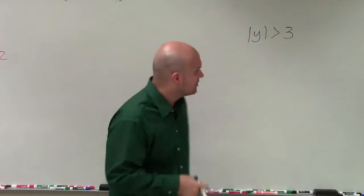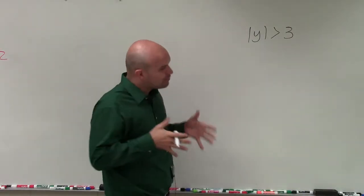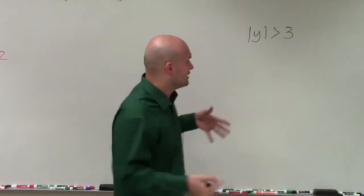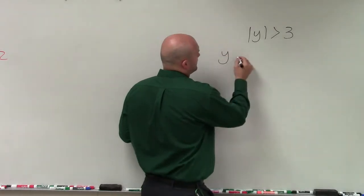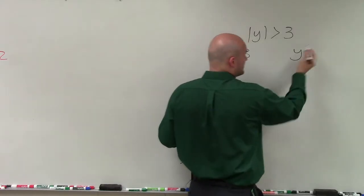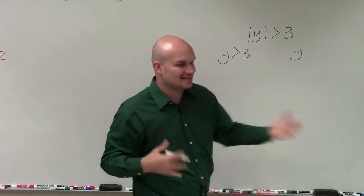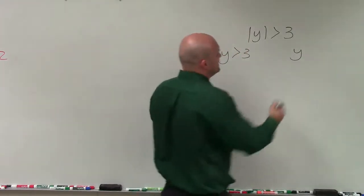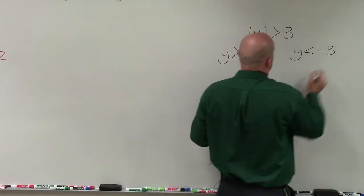To do a problem like this, basically what we need to look at is creating our two cases. One, we're going to have y is greater than 3. Then we need to take the case of y is greater than negative 3. But remember, when we're negating a side, that's like multiplying and dividing by negative 1. So we need to make sure we flip the sign.